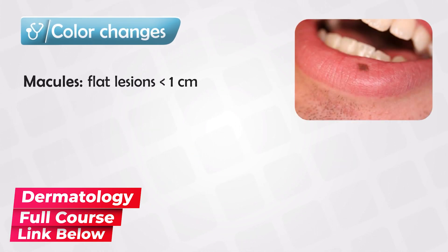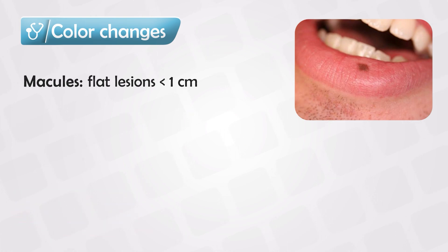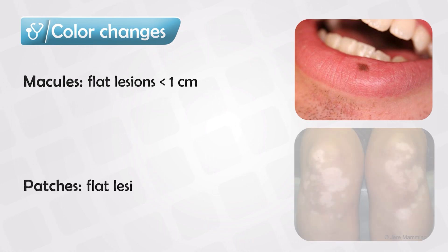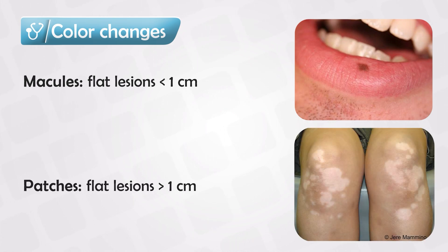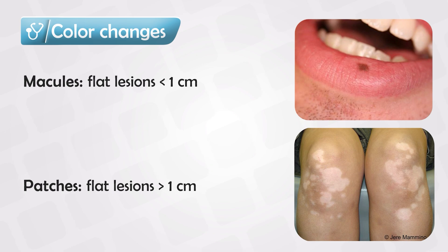Changes in the color include macules and patches. Macules are flat skin lesions that have changed in color and they are less than one centimeter. Patches are flat skin lesions that changed in color which are more than one centimeter. So both macules and patches are flat skin lesions and the only change is in the color. Macules are small and patches are big.